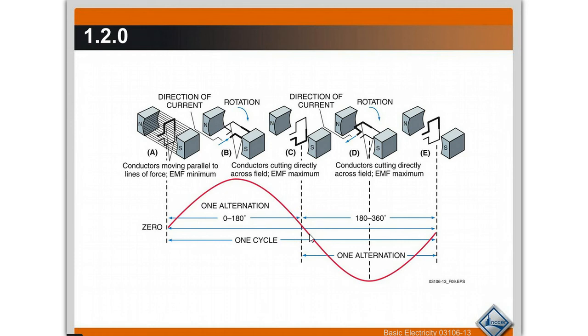And then as we rotate the other half of that coil through, it creates a negative electron flow. So what happens is with your AC current, it's flowing in one direction here, peaks out, goes down to zero, and then it flows in the opposite direction.